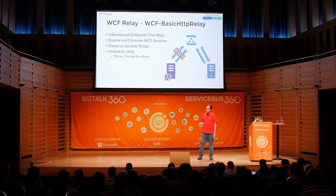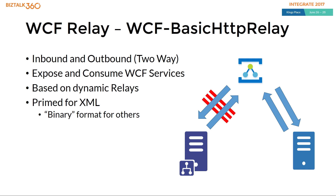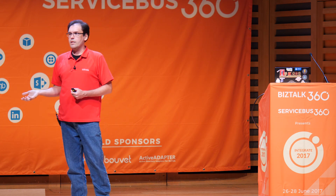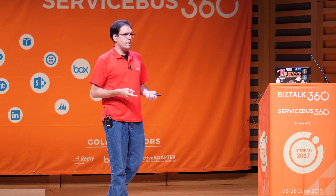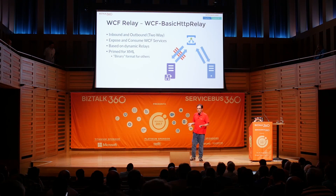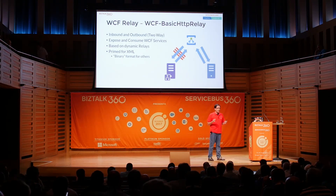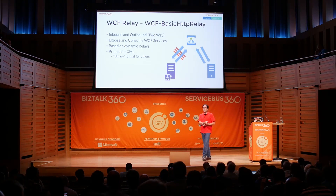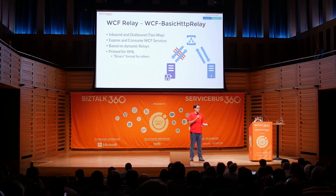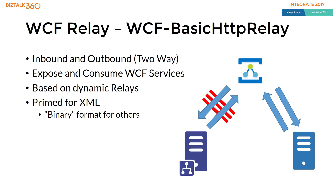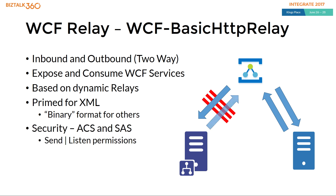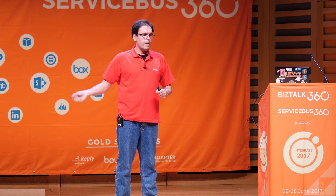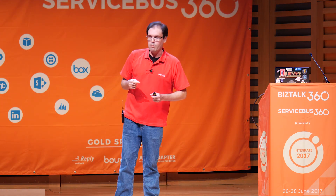It is primed for XML because it's based on WCF and expects XML messages. When I was doing testing on the Relay, I found out by mistake that if you put anything that is not XML there and don't tell the Relay what you're sending, by default it's going to wrap it all in a binary element. So there are some workarounds to allow you to bring JSON inside BizTalk, as long as you have a component that converts it from base64 to whatever the message is. So in theory, although it is primed for XML, you can pass something else and it will wrap it in a binary XML element.